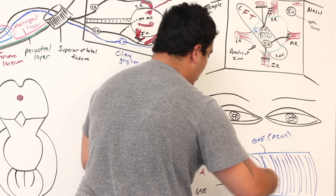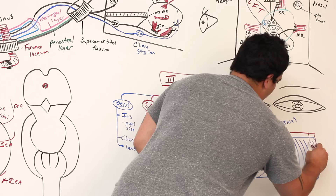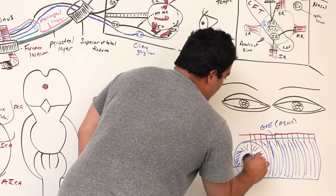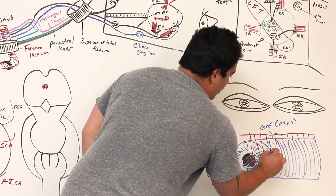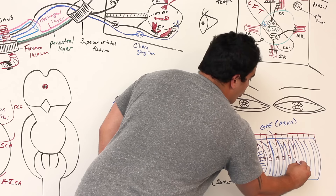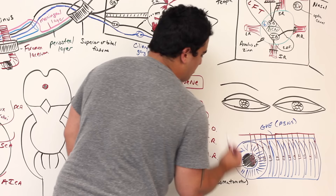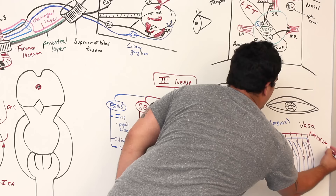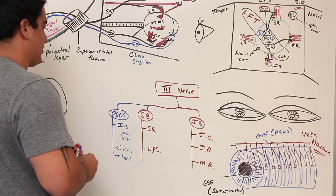The nerve itself has a blood supply called the vasonervorum — a microvascular system of tiny blood vessels that specifically supplies the somatomotor fibers. This is analogous to the vasa vasorum that supplies blood vessels. This microvascular supply also has important clinical correlations.